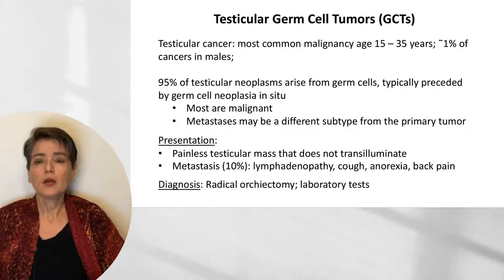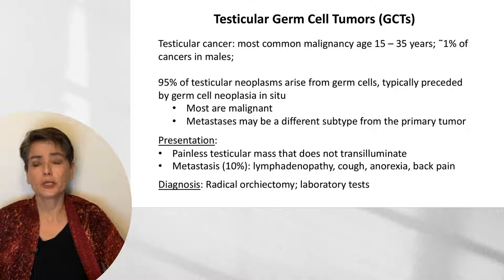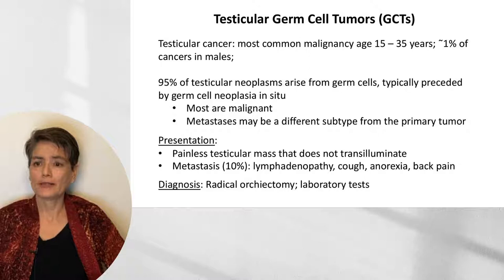Most testicular germ cell tumors will present as a painless testicular mass that does not transilluminate. This is in contradistinction to a hydrocele that will transilluminate. However, about 10% of cases will present due to manifestations of metastasis, such as lymphadenopathy, cough, anorexia, or back pain due to skeletal metastases.